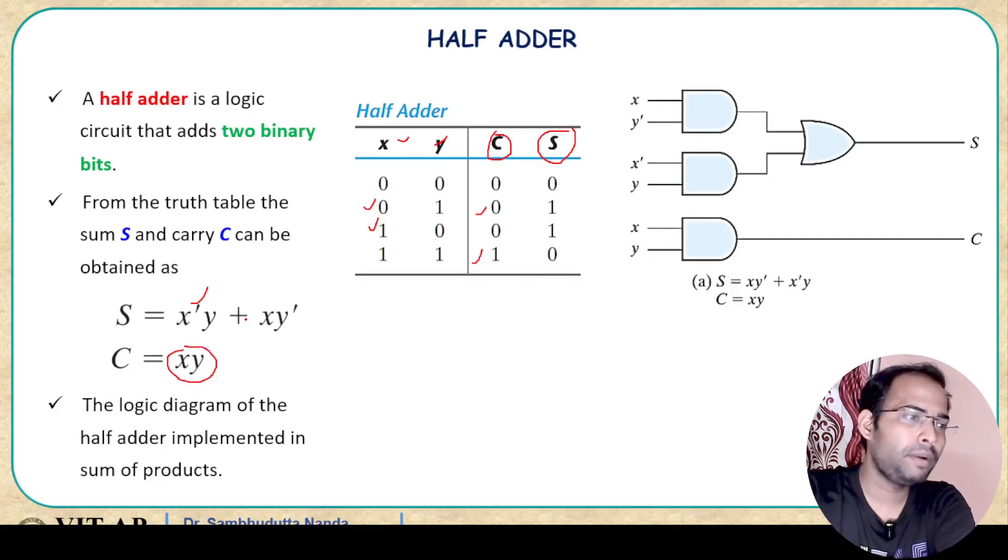Now here x dash y plus x y dash will give you the sum and if you look into the carry then it will be here x and y, x dot y. Now if we implement this simple Boolean expression through a logic, then this is how the circuit will look like. So x dash y, then here x y dash, these are given to an OR gate and finally we will get the sum here. Now the carry can easily be given as just AND gate of x and y, it will give you carry.